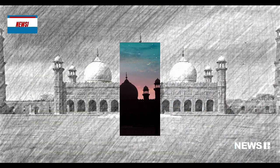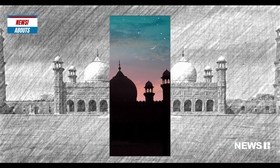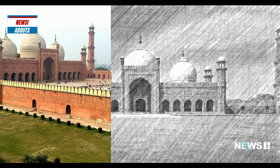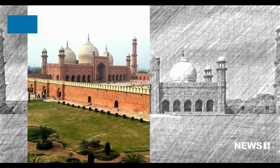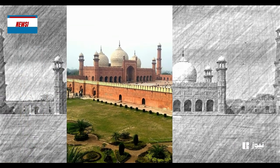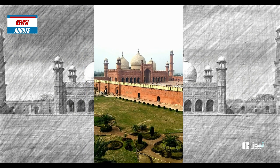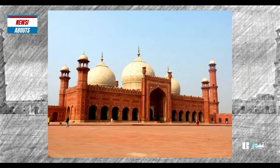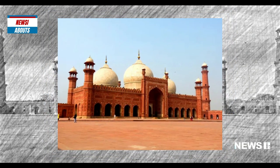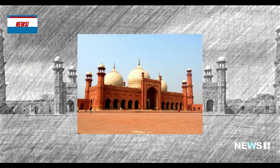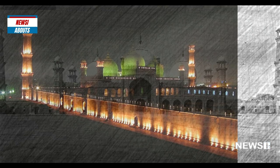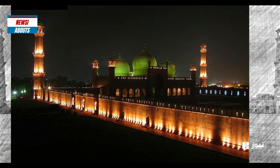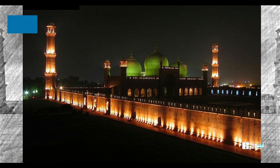The design of the mosque was inspired by the Jama Masjid in Delhi, which was built by Aurangzeb's father, Emperor Shah Jahan. The construction of the mosque was carried out under the supervision of Nawab Bahadur Khan, the governor of Lahore.